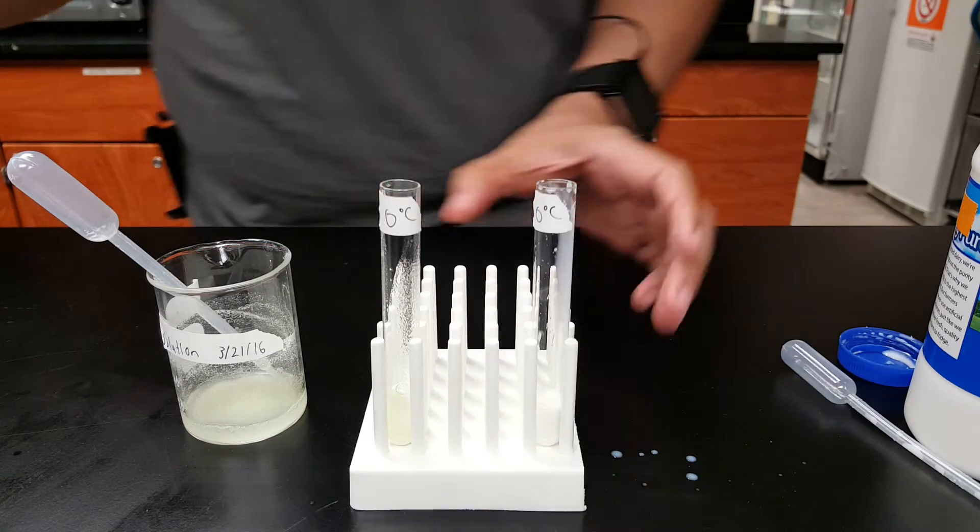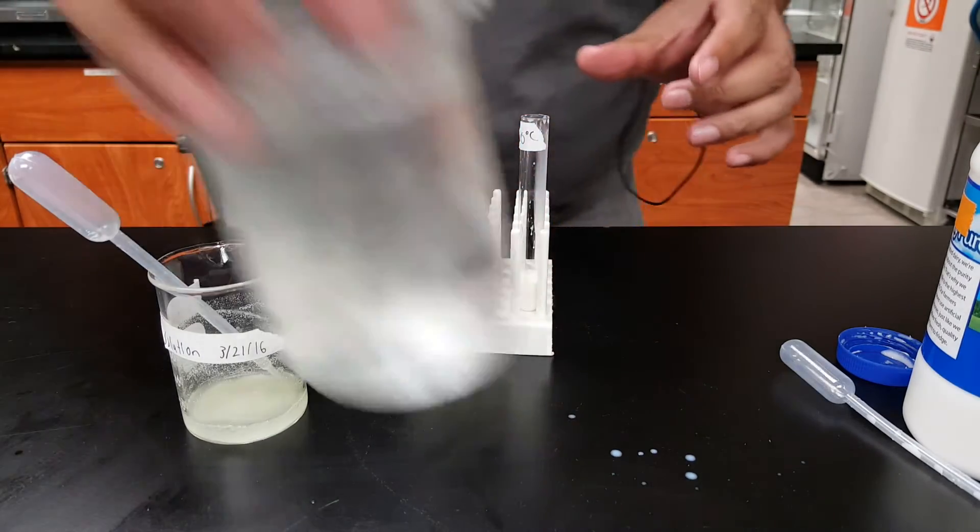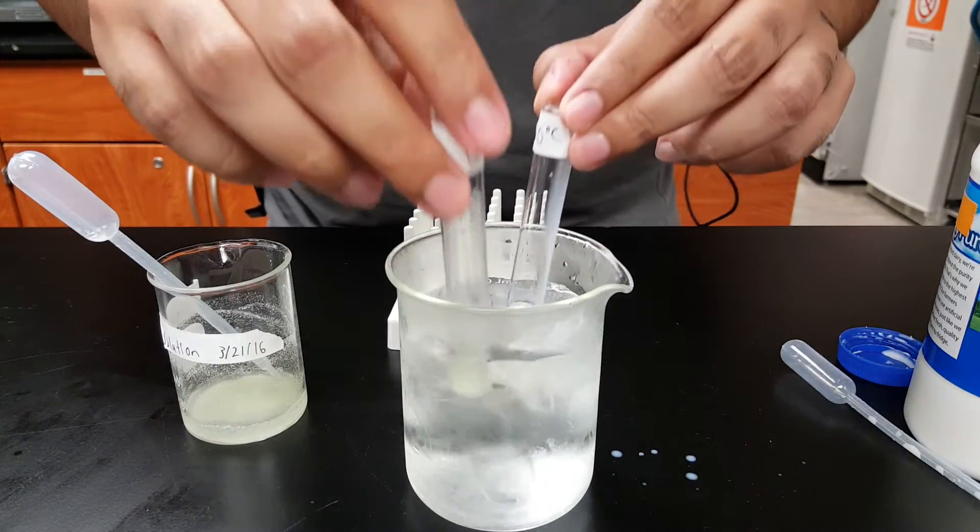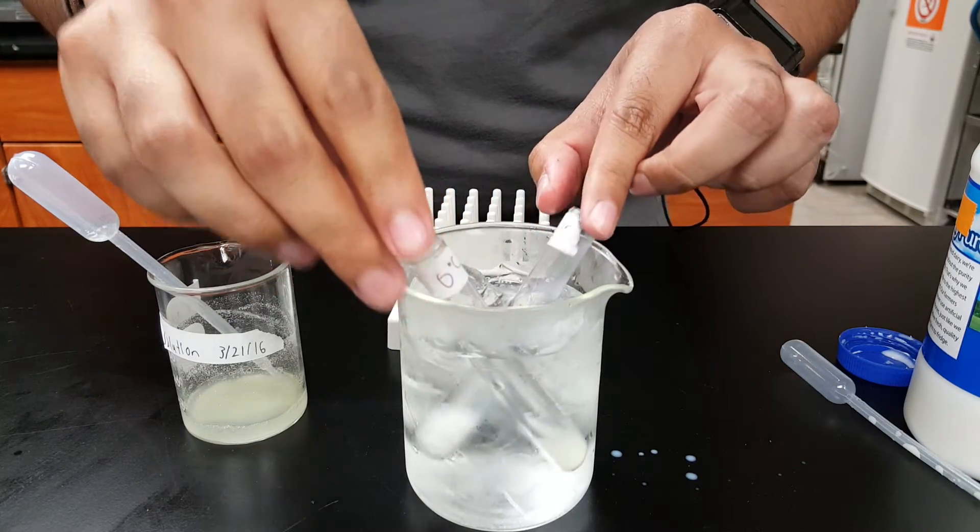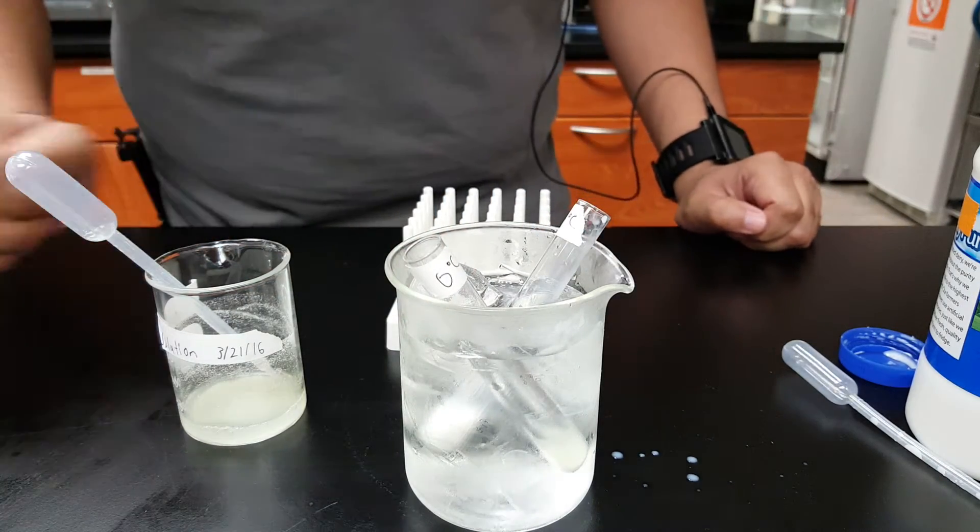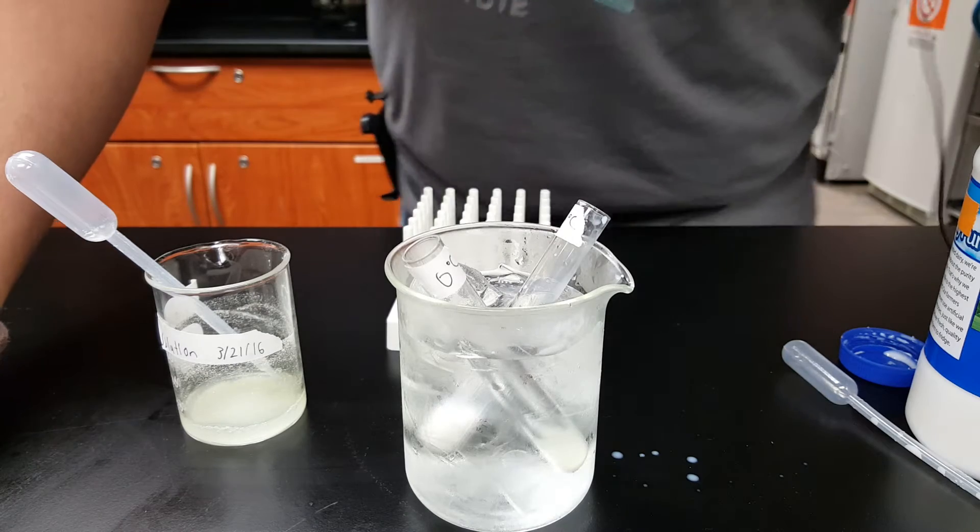Now you take both of the test tubes and put them in an ice bath to make sure they're nice and chilly. And then you leave them alone like that for about five minutes.